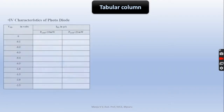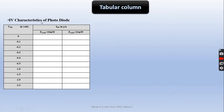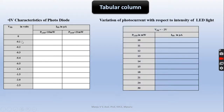Now for the tabular column: this is the IV characteristics of the photodiode, where we vary the photo voltage in steps of 0.1, 0.2, 0.3, 0.4 — this is the reverse voltage since the photodiode is connected in reverse. Note down the current at different LED intensities. In the second phase, it is the variation of photocurrent with respect to LED light intensity, where we keep the voltage at around minus 2 volts and vary the intensity to note down the photocurrent.